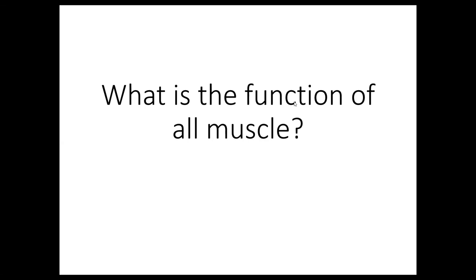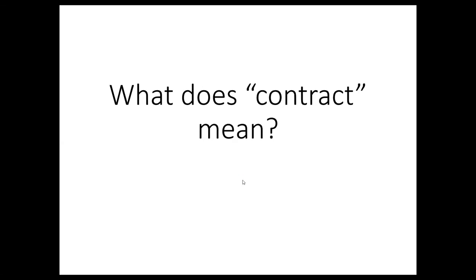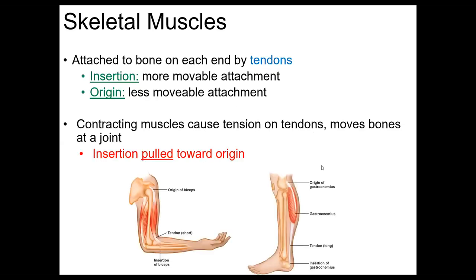Before we think about fascicle organization, let's talk about the general function of all muscle tissue. People usually say 'to contract,' and contraction means to shorten. So what we're really doing is shortening the muscle fibers — shortening the cells — and when you shorten the cells, that's going to pull on the bones and create movement.